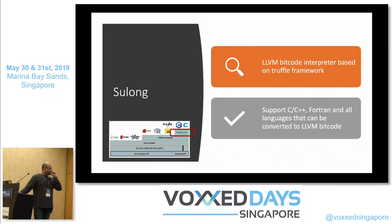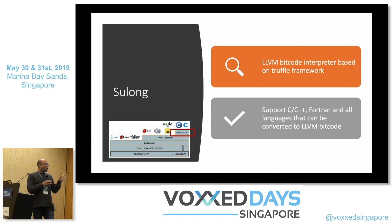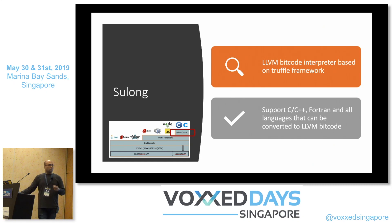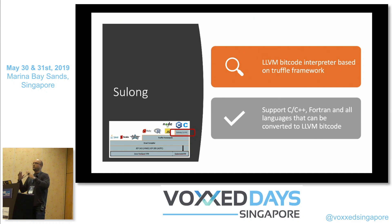Sulong is one of the Truffle implementations. Sulong is actually an LLVM — a low-level virtual machine interpreter — to support C++ or any other language that can be compiled into LLVM bitcode using frontends like Clang or Macroby. If you're interested in the managed-to-native route, where you want to use C or C++ or any LLVM-based language in Java, this is the area you should be looking at.